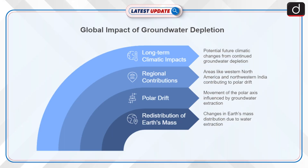Moving on to key findings and impact of groundwater depletion: groundwater extraction has caused a redistribution of Earth's mass, affecting its rotation and the movement of its polar axis. The polar drift rate is about 4.36 cm per year, with regions like Western North America and Northwestern India being major contributors due to heavy water extraction.